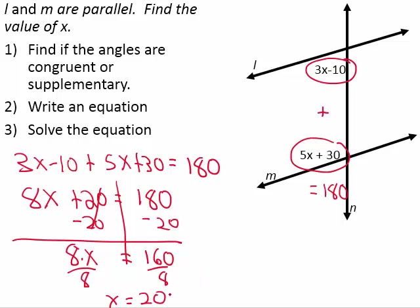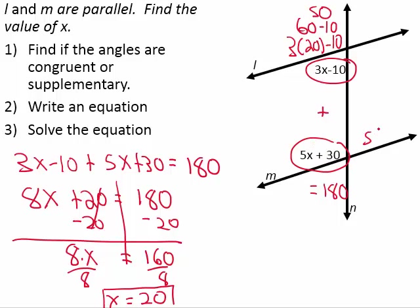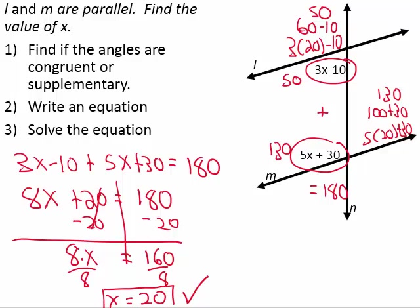Now that we know x is equal to 20 degrees, we can check our solution by substituting 20 into both angles. 3 times 20 minus 10 is 60 minus 10, which is 50. For the other angle, 5 times 20 plus 30 is 100 plus 30, which is 130. So this angle is 130 degrees, the other is 50 degrees, and 130 plus 50 is 180. That means x equals 20 is the correct solution.